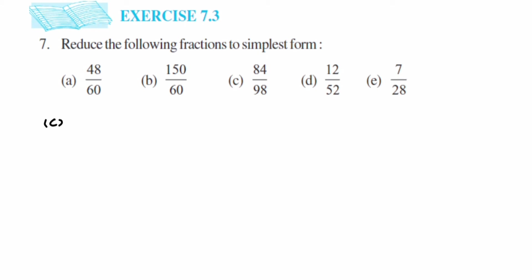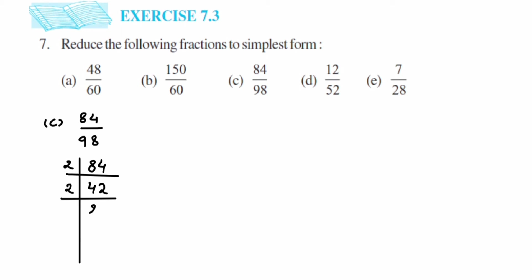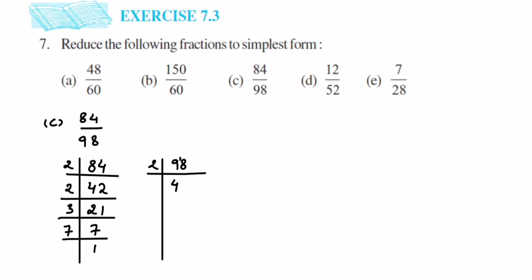The third question is 84/98. Both are even numbers. We'll do prime factorization again — if it's very difficult, go for cancellation. For 84: 2 × 42 = 84, 2 × 21 = 42, 3 × 7 = 21, and 7 × 1 = 7. For 98: 98 is an even number, so 2 × 49 = 98. Then 49 goes in the 7 table: 7 × 7 = 49, and 7 × 1 = 7.